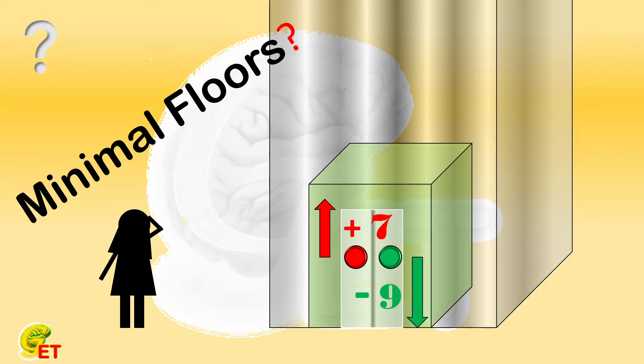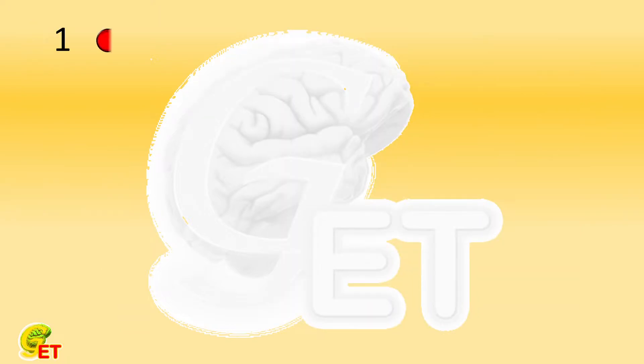First, despite the limitation from the total number of floors, let's check if we can reach every floor with this elevator. For instance, to reach the first floor, we can press the red button for 4 times, then the green button for 3 times. So that we first go up for 28 floors, then go down for 27 floors, and finally reach the first floor.